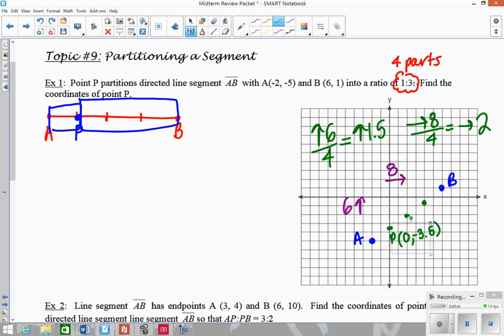If this were different, if this were 2 to 3, then I would be looking at this point here. Or if it were like 2 to 2, I would be looking at this point. If it were 3 to 1, I'd be looking at this point. Because you have to look at how many parts to how many parts is what you're comparing.